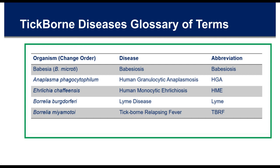Here are the TBDs — tick-borne diseases — we'll be talking about today. The first column is the name of the organism, the second the name of the disease, and there are columns for abbreviations and the years the first human cases were discovered. Lyme disease was discovered in 1976. The most recent pathogen on this list, Borrelia miyamotoi, had its first human cases in Russia in 2011 and the first North American case in late 2012, published in 2013.